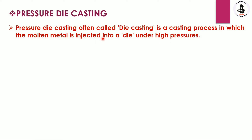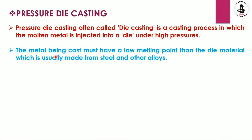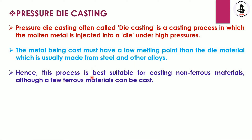Pressure die casting can be performed under the condition of the hot as well as cold, giving two types: hot chamber die casting and cold chamber die casting process. The metal being cast must have a lower melting point than the die material, which is usually made from steel and other alloys. So in this process we most prefer low melting point materials as workpiece materials. Hence this process is best suitable for castings of non-ferrous materials, although a few ferrous materials can also be cast.